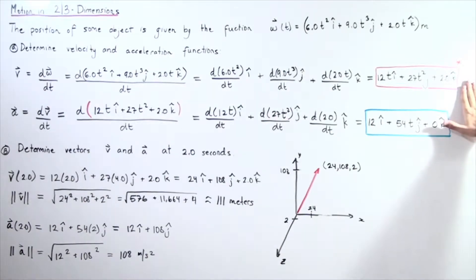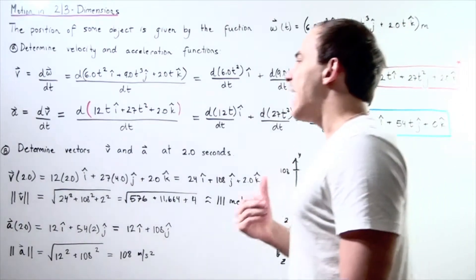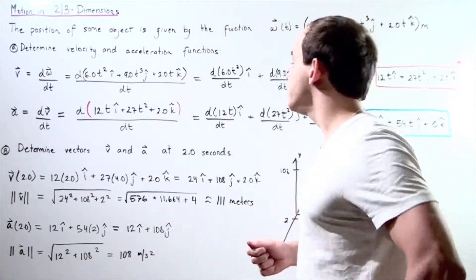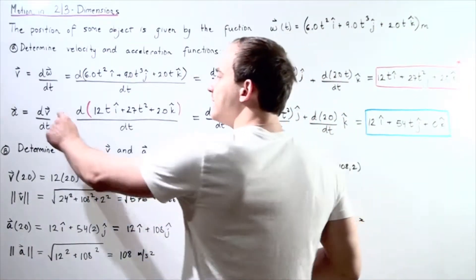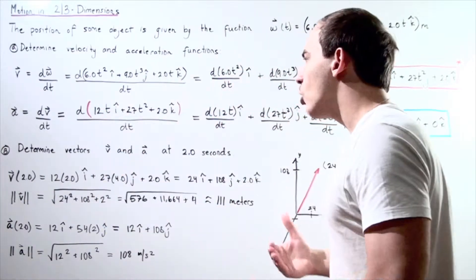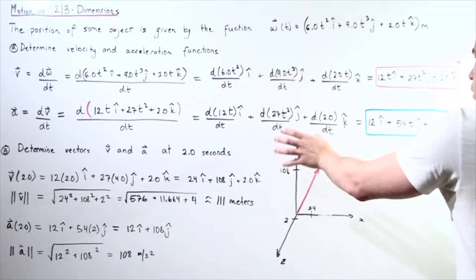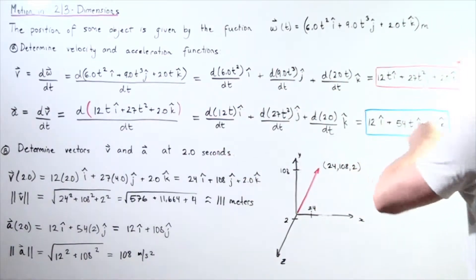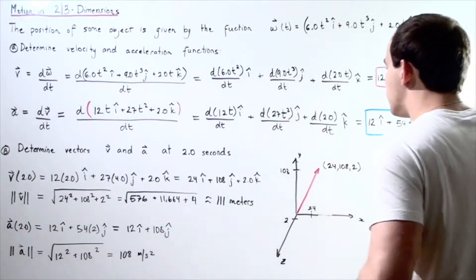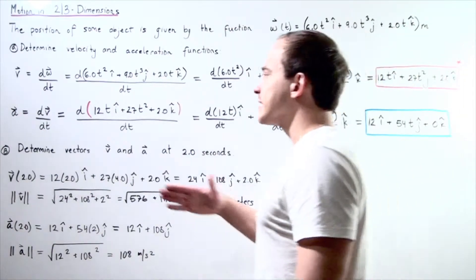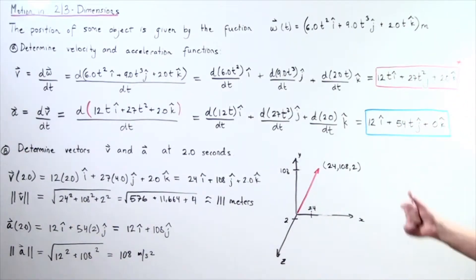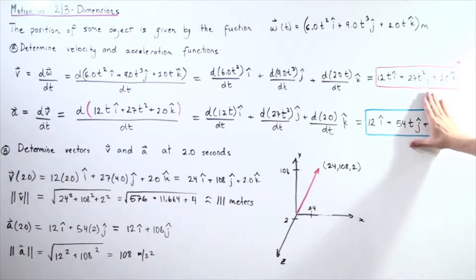For any given time t, plugging in t gives the velocity vector at that instant. Now let's find the instantaneous acceleration vector. I take the velocity function and differentiate again, distributing the derivative to the x, y, and z components. The derivative of 12t is 12, the derivative of 27t squared is 54t, and the derivative of 2 is 0. So my acceleration vector function is 12 i-hat plus 54t j-hat plus 0 k-hat. Since the z component is zero, the acceleration effectively has only two directions — there is no component along the z axis.